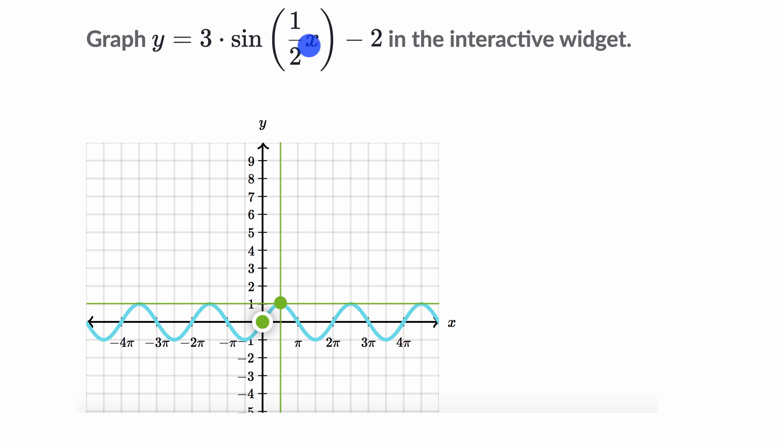Well, one way to think about it—there's actually two ways to think about it—is a coefficient right over here on your x term. That tells you how fast the thing that's being inputted into sine is growing. And now it's going to grow half as fast.